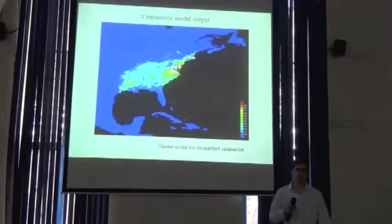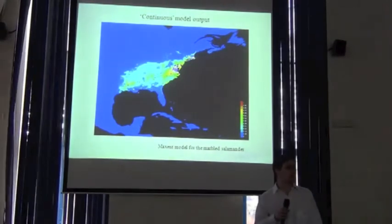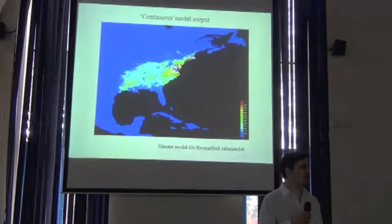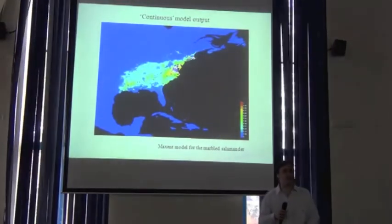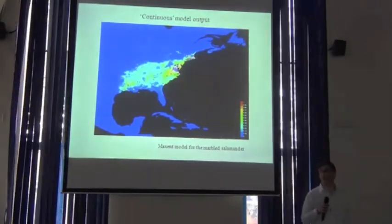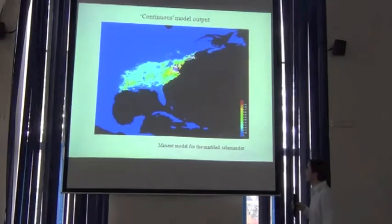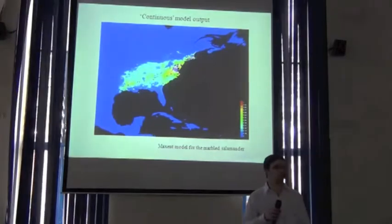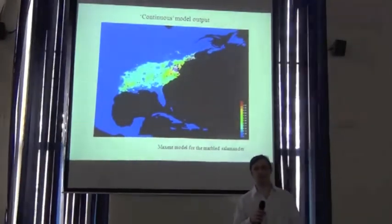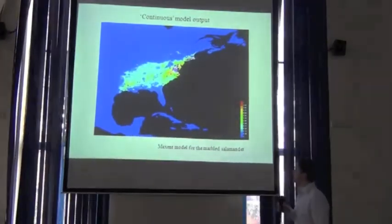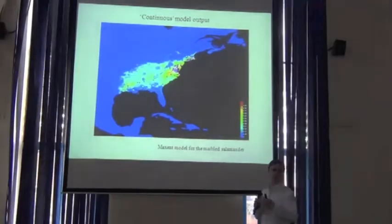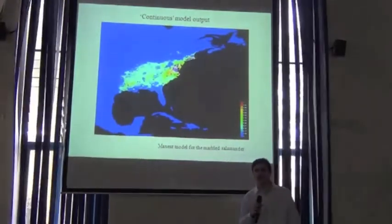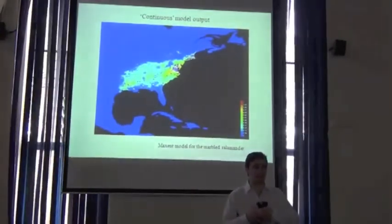Many of these methods that we're working with — the GARP results that you're literally right now processing and the Maxent models that we ran an hour or so ago — give you not just a binary prediction of suitable or not suitable, or present or absent. They give you some sort of suitability surface: an index of suitability, or as we were saying in the Maxent sense, it really is a probability surface.